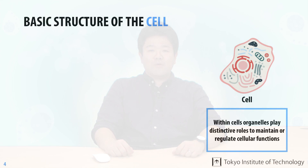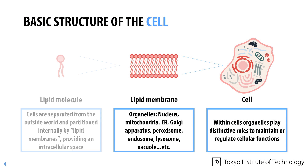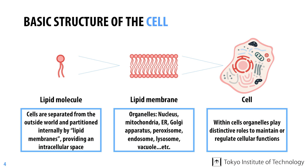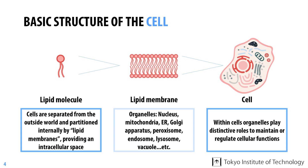Cells are small compartments bound by lipid membranes. These membranes separate cells from the outside world, providing an internal space for cellular material and the reactions that are essential for life. Cells contain different membrane compartments called organelles, such as the nucleus, mitochondria, lysosomes, and vacuoles. These organelles play distinct roles to maintain or regulate cellular functions, like the organs of our bodies.